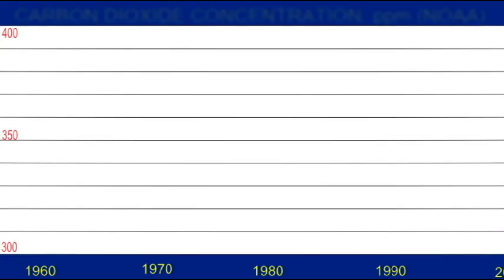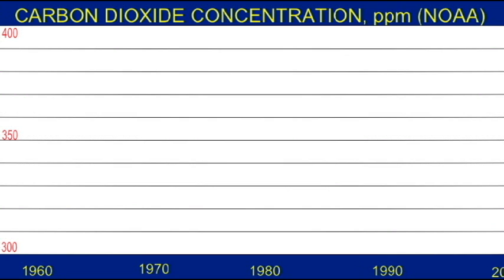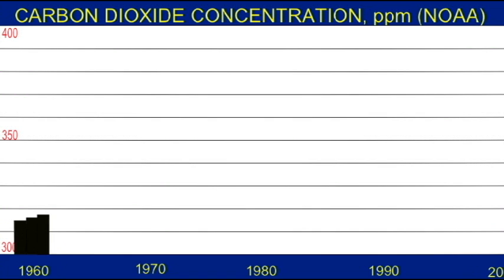Much of this energy is produced through the burning of fossil fuels, such as coal and oil, which then produces carbon dioxide. Not surprisingly, carbon dioxide levels in the atmosphere have been steadily rising.